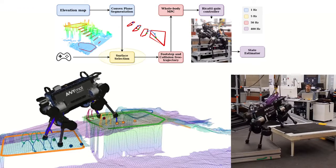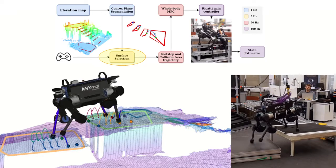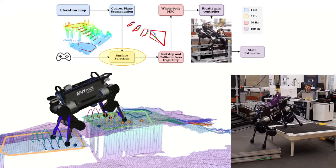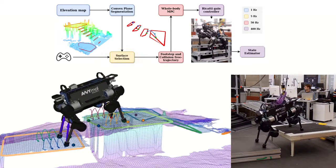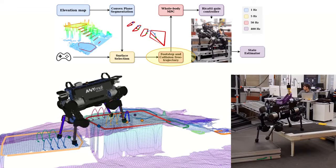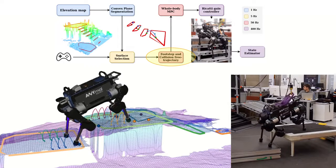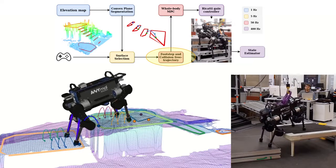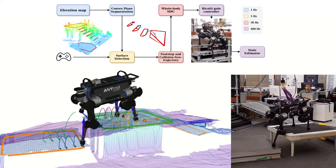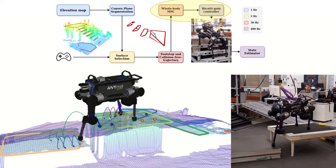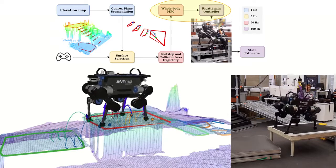Concretely, our high-level planner called surface selection selects the next surfaces of contact. Then, our collision-free trajectory generator computes each moving end effector separately. Finally, our whole body MPC generates the entire motion at 50 Hz.